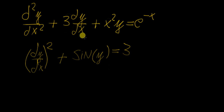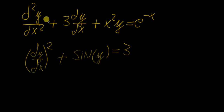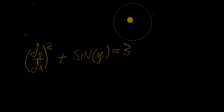Now these two examples pertain to the class of ordinary differential equations, which means they only involve functions of a single variable — in this case, y is just a function of x. There is another class called partial differential equations, and those are the ones that involve partial derivatives.